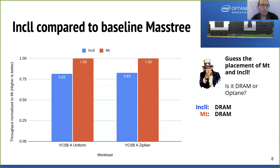If you guessed DRAM for both, congratulations. The slowdown of in-cache line logging is 18% for the uniform access pattern and 17% for the Zipfian access pattern. The current machine is different compared to the one used for ASPROS. However, the results are within the expected performance range.